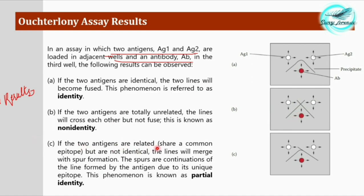In the third case, if the two antigens are related but not identical — sharing a common epitope — the lines will merge with spur formation. The spurs are continuations of lines formed by the antigens due to their unique epitopes. This phenomenon is termed partial identity. So the three cases are: identity, non-identity, and partial identity.